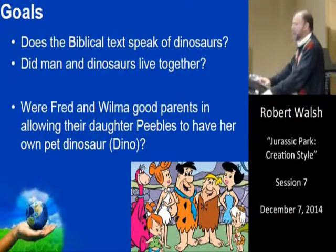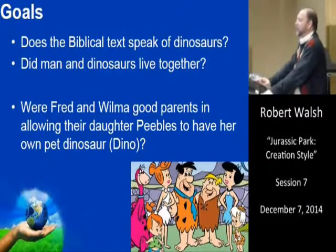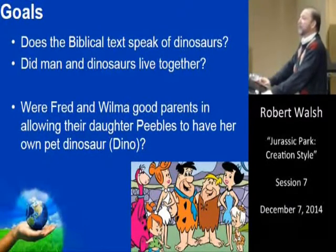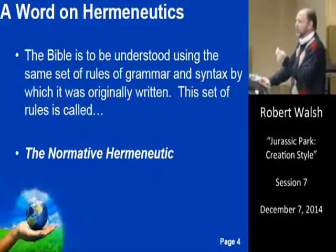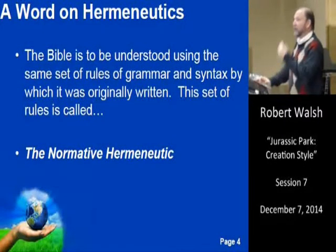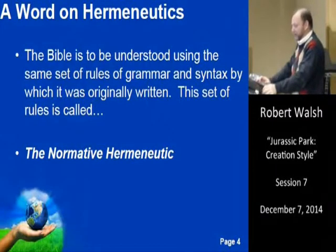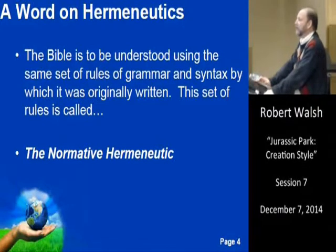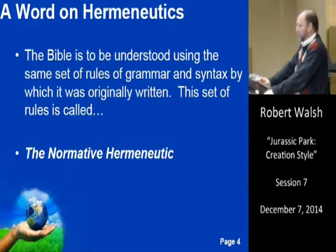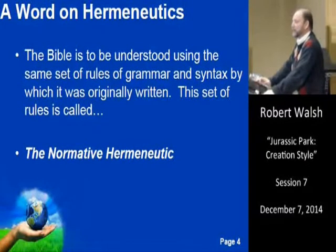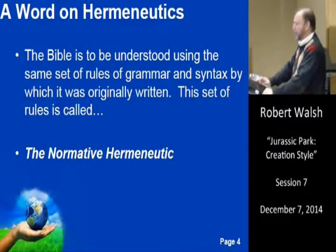As we've done in virtually every one of these sessions in the first half, we've mentioned the issue of hermeneutics. It's more important than the topic itself because it's the machinery by which you and I get at the text. If we have the machinery, we can derive the doctrine of the Trinity, the atonement, the doctrine of creation. The Bible is to be understood using the same rules of grammar and syntax by which it was originally written.